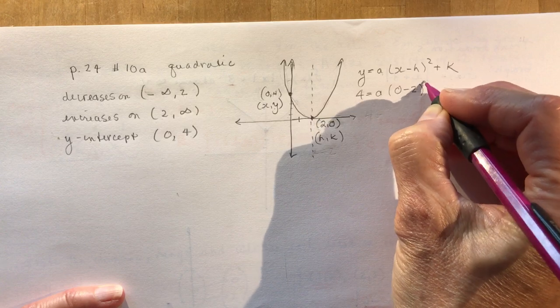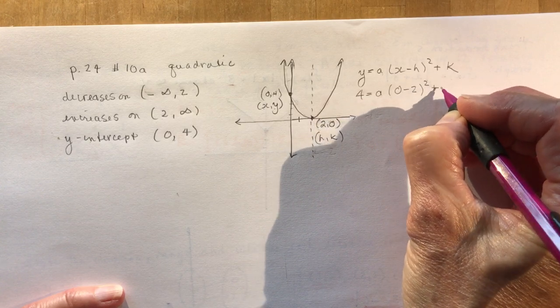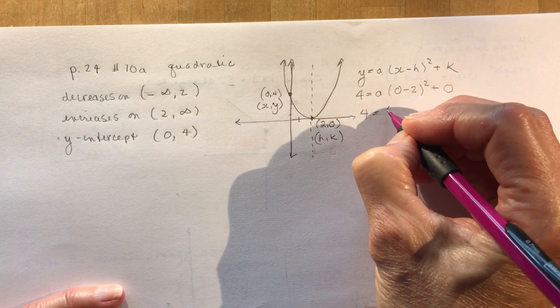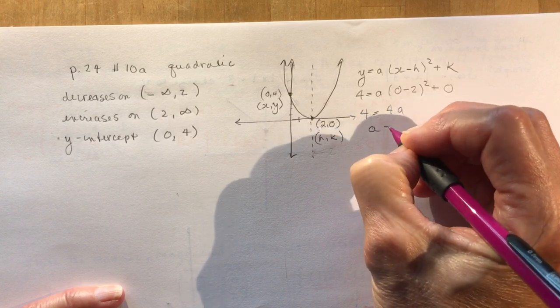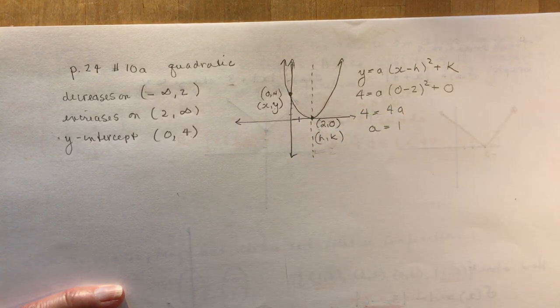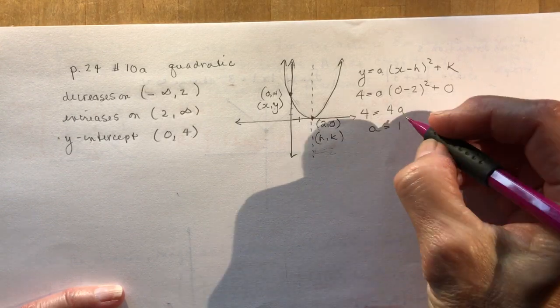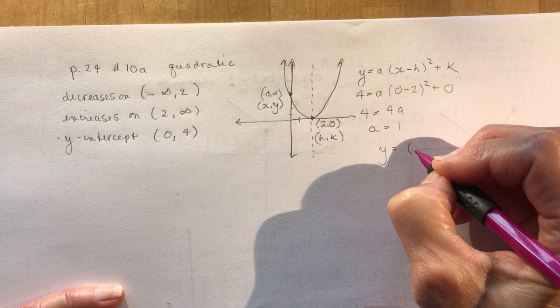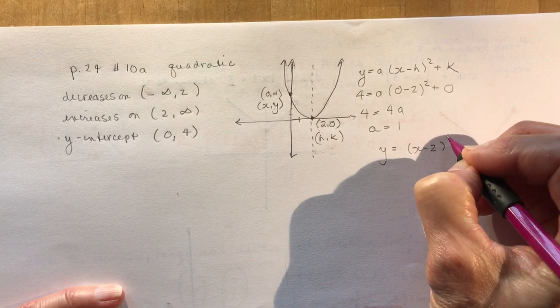So I have x is 0, h is 2, squared, plus k, which is 0. So I get 4 is equal to 4a, so that means a is equal to 1. So a possible equation for this function would simply be y equals (x minus 2) squared.